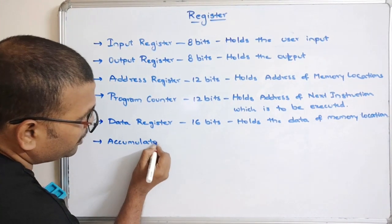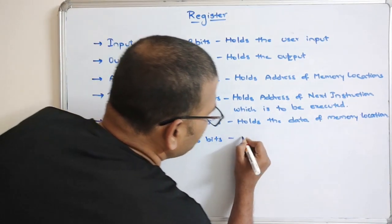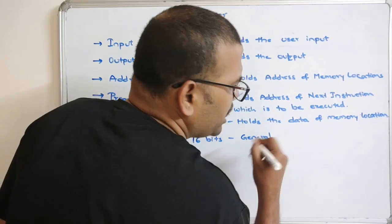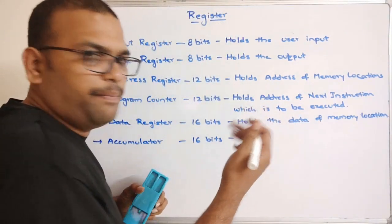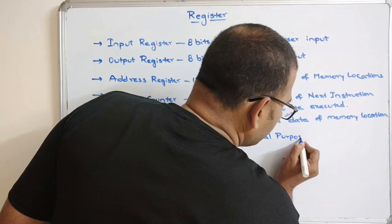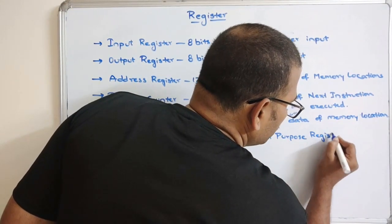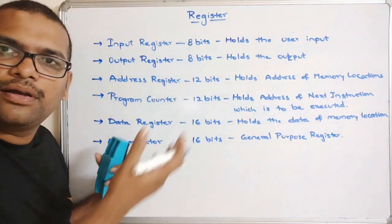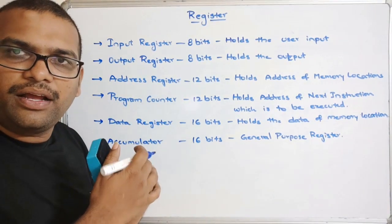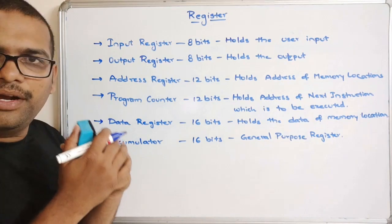The Accumulator is also 16 bits in size and is a general-purpose register, which can be used for any kind of instruction or data — it can be used for anything.